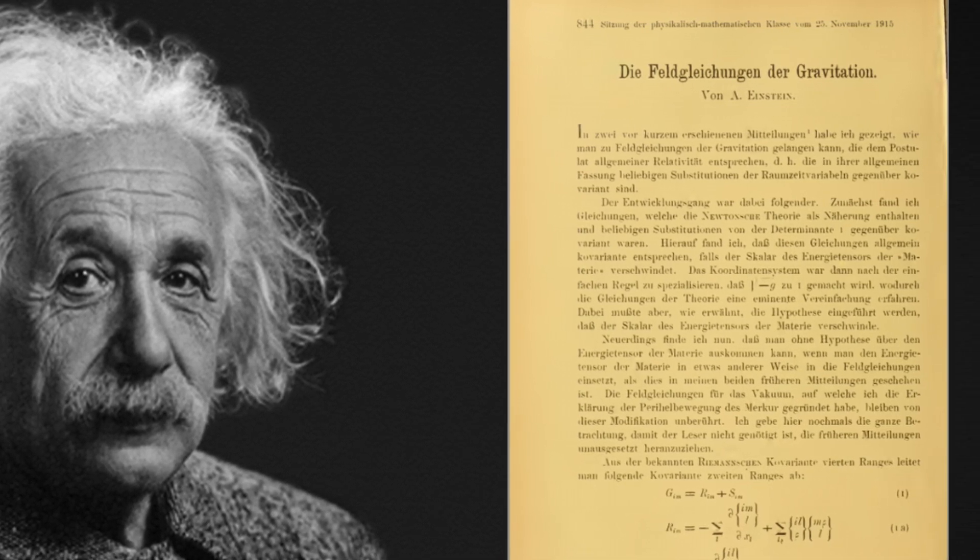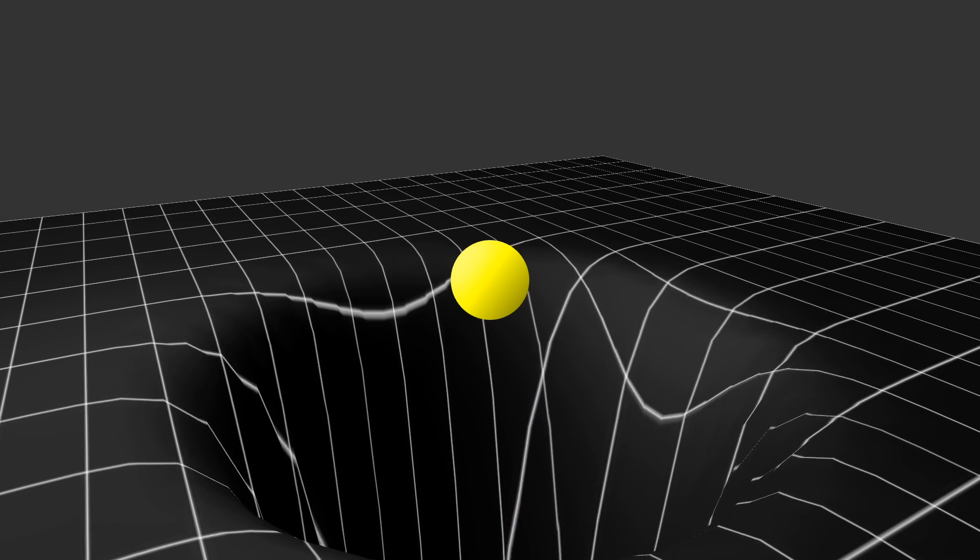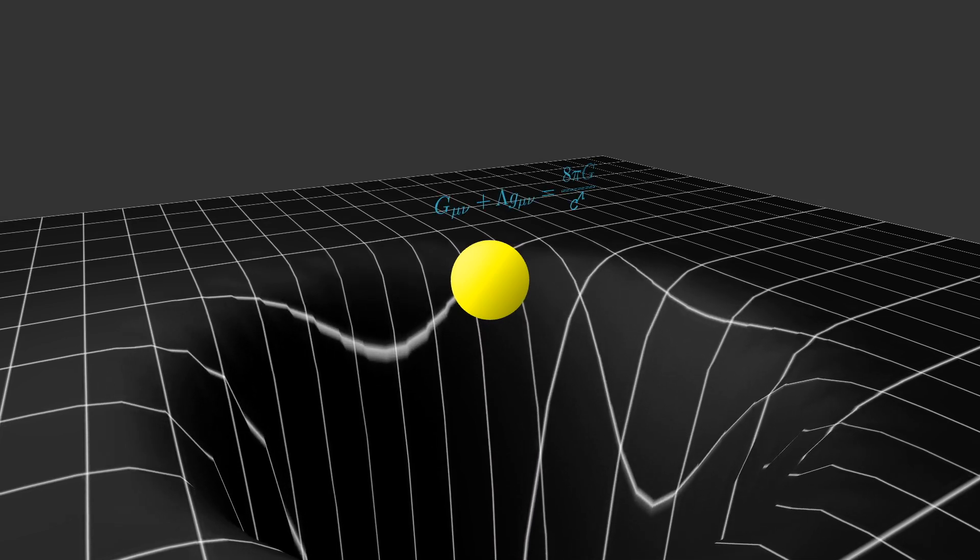Imagine yourself in the shoes of one of the most brilliant people who have ever lived. You are Einstein, and you have just put out your theory of general relativity, the equations that describe how gravity emerges from the curvature of space and time.